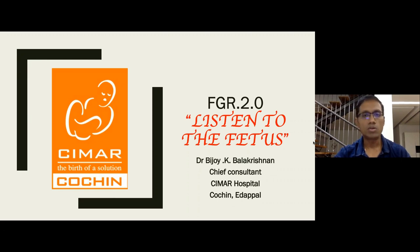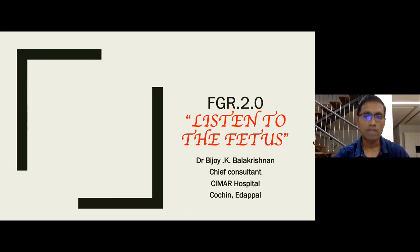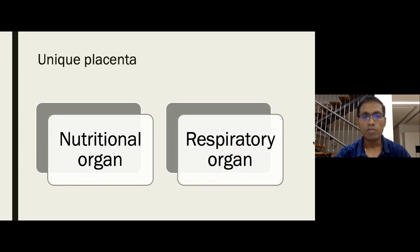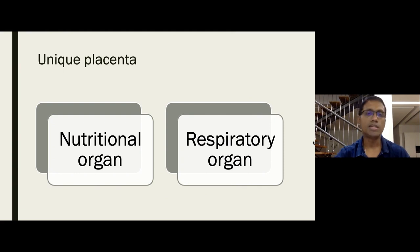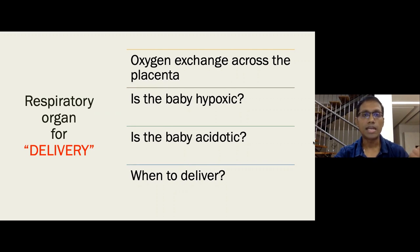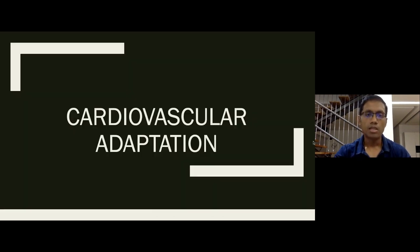To recap: the key message is to listen to the fetus rather than hear what you want to hear. The three management key concepts are: the uniqueness of the placenta, cardiovascular adaptation versus brain stem suppression, and hypoxic threshold versus lung maturity. The placenta functions both as a nutritional organ and a respiratory organ. We assess its nutritional capacity to diagnose FGR, and its respiratory capacity — is the baby hypoxic or acidotic? — to decide on delivery.